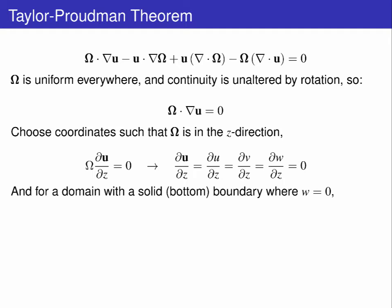Now, if there is anywhere in the domain that you know w equals 0, like a boundary, then because dw dz equals 0, w is 0 everywhere.